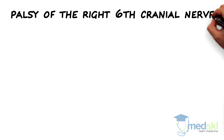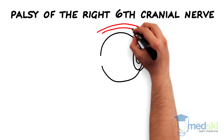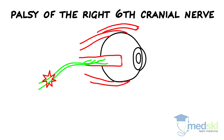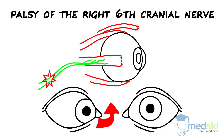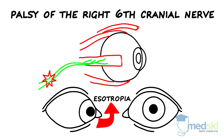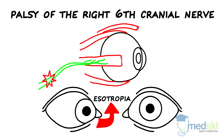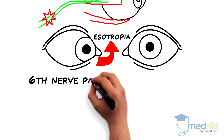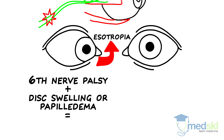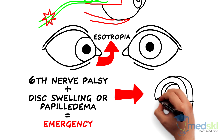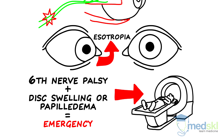A sixth cranial nerve palsy is another diagnosis you cannot afford to miss. It can present with an inturned eye called esotropia and limited abduction in one or both eyes. If associated with disc swelling or papilledema, neuroimaging must be ordered emergently to rule out raised intracranial pressure due to intracranial pathology.